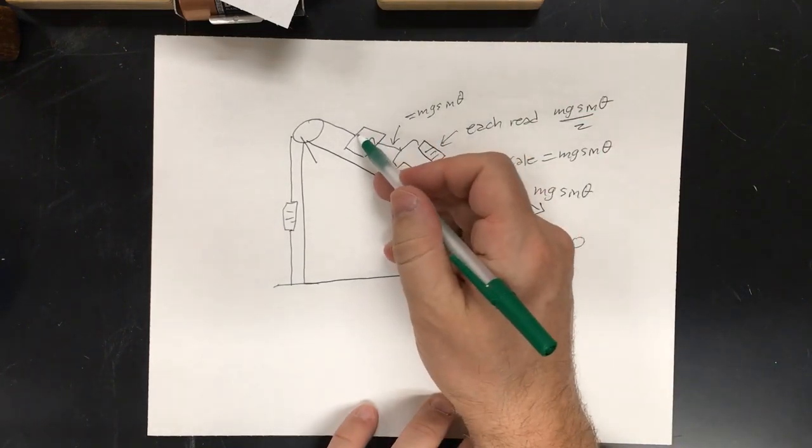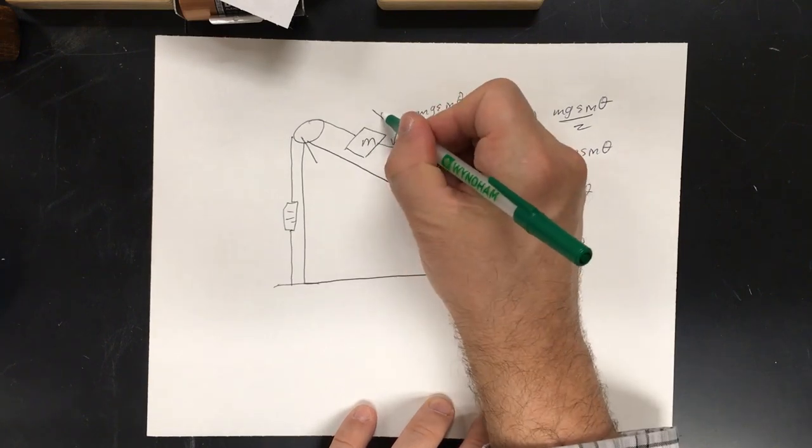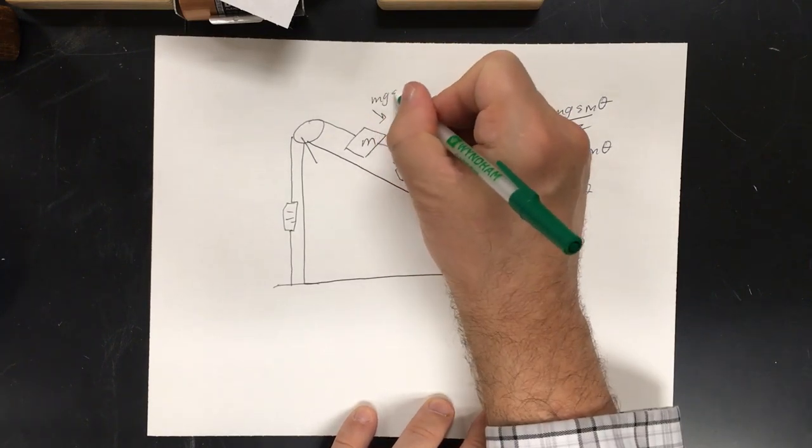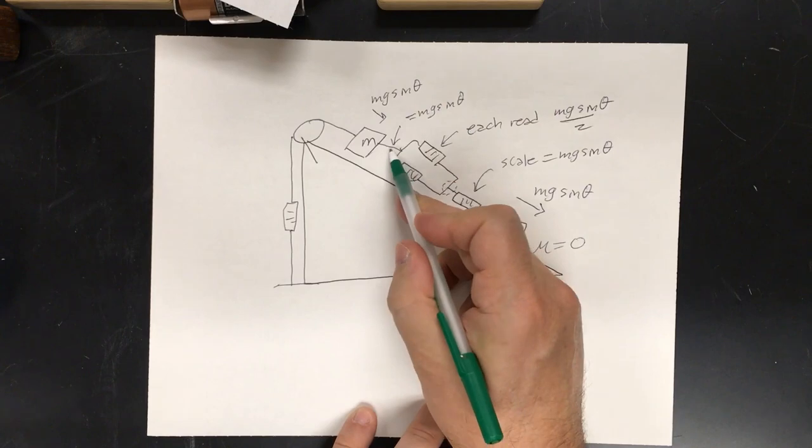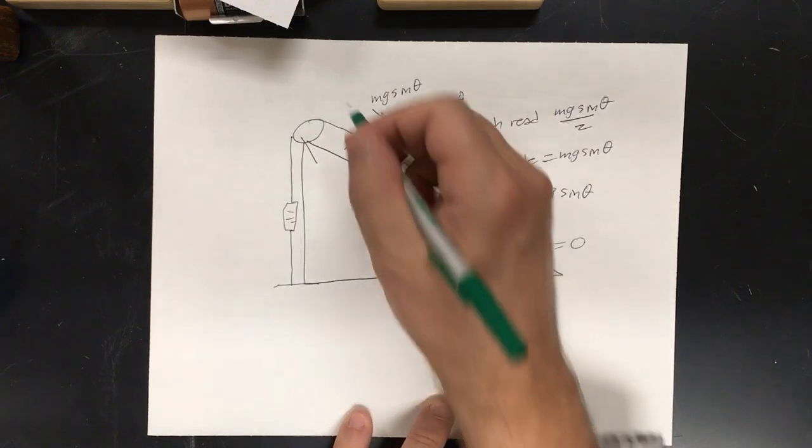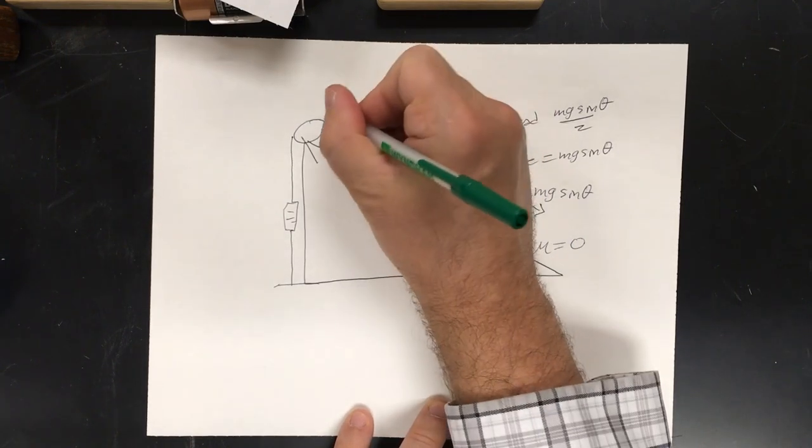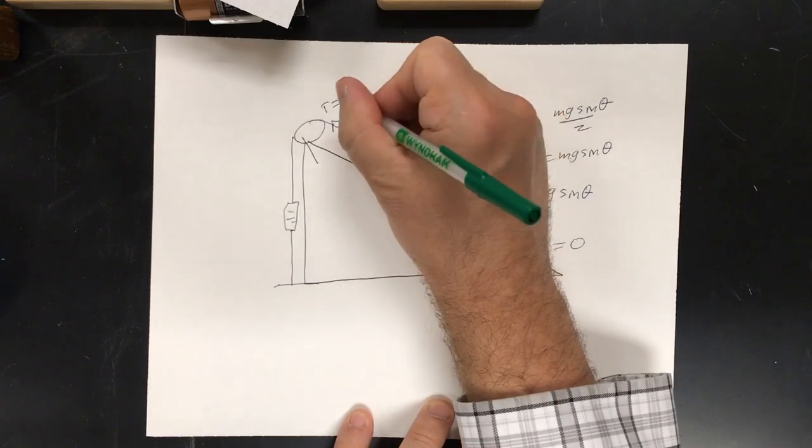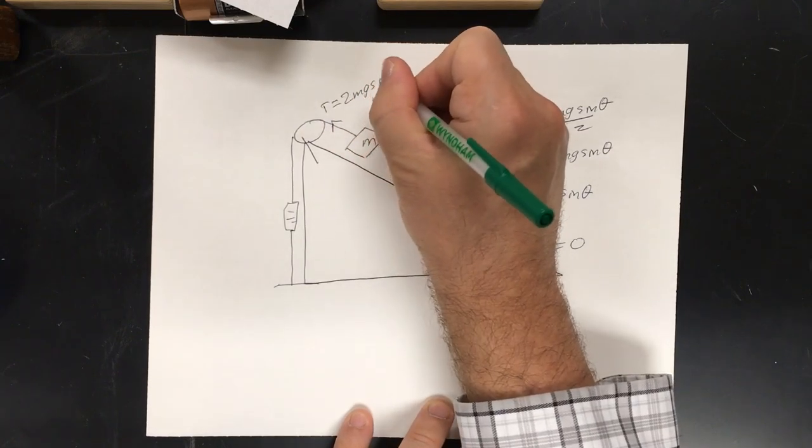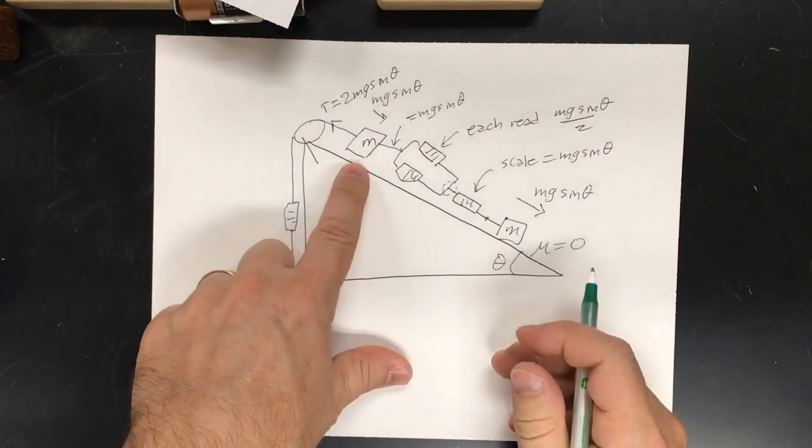Now, we've got another, now we've got an issue here. This one is going to pull down with mg sine theta. And, you have this pulling down with mg sine theta. So, this tension here equals two mg sine theta. Because, you've added another mass.